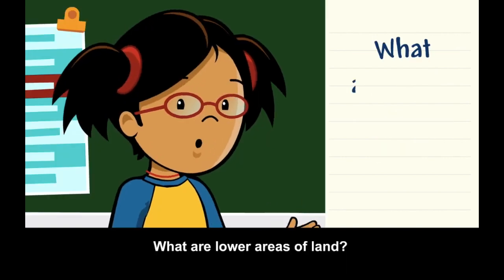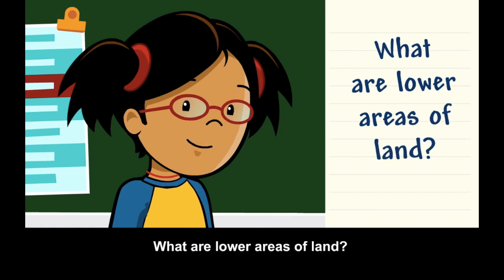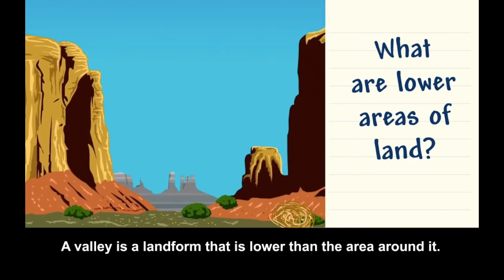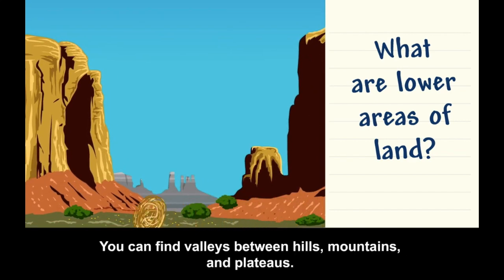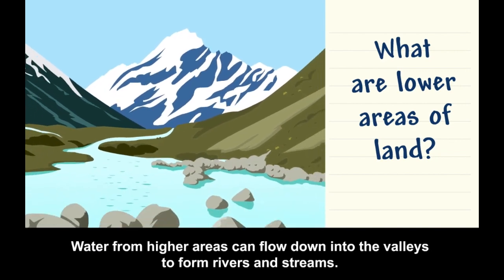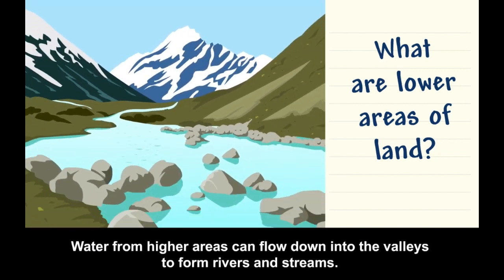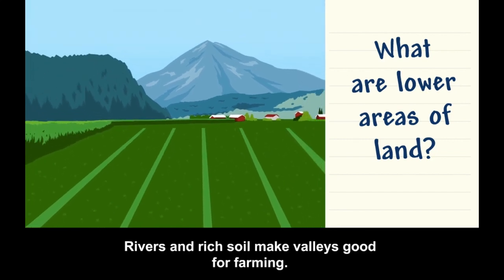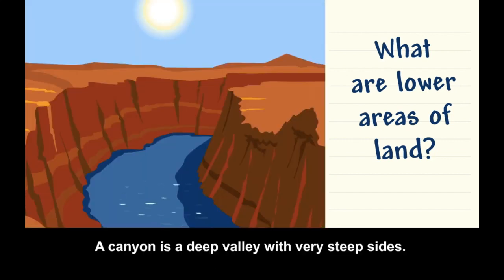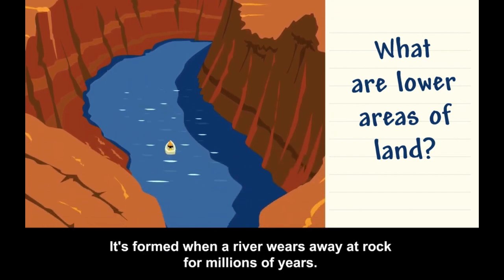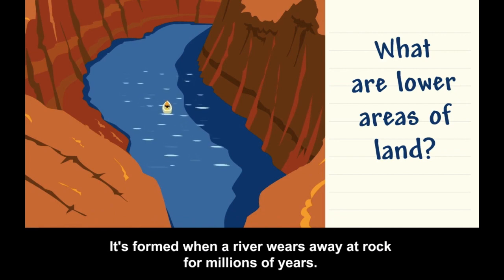What are lower areas of land? A valley is a landform that is lower than the area around it. You can find valleys between hills, mountains, and plateaus. Water from higher areas can flow down into the valleys to form rivers and streams. Rivers and rich soil make valleys good for farming. A canyon is a deep valley with very steep sides. It's formed when a river wears away at rock for millions of years.